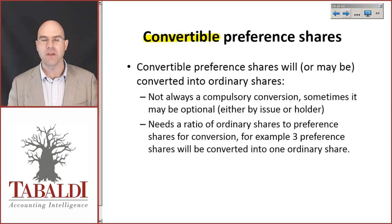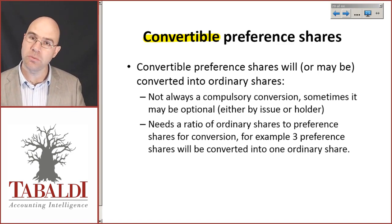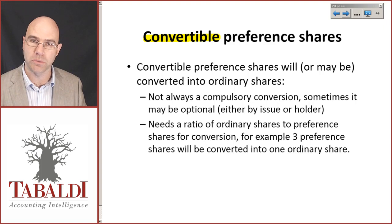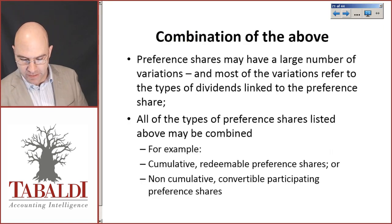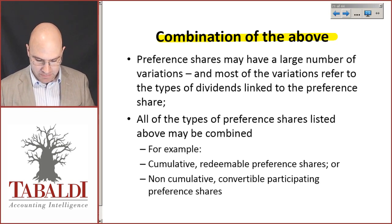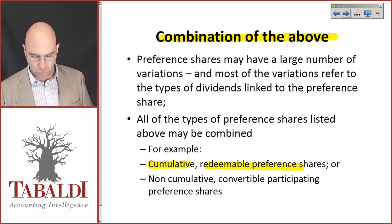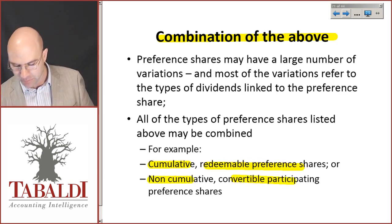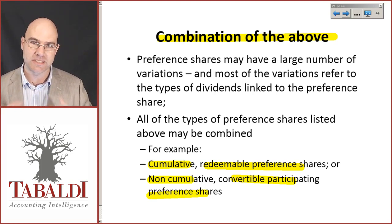Convertible preference shares are preference shares that may be convertible at a future stage to ordinary shares. There may also be a combination of any of these — for example, a cumulative redeemable preference share or a non-cumulative convertible participating preference share. All of these will be laid out with a specific set of terms in the agreement.